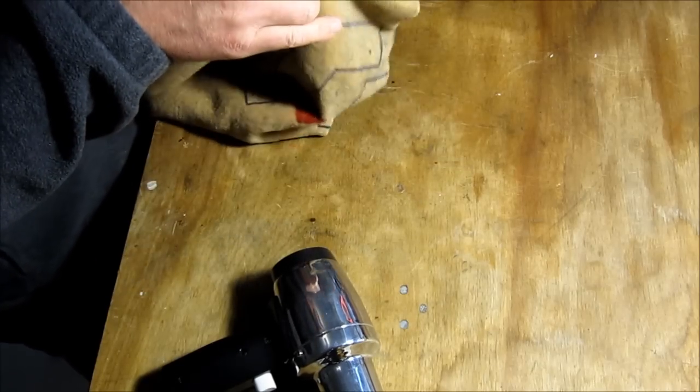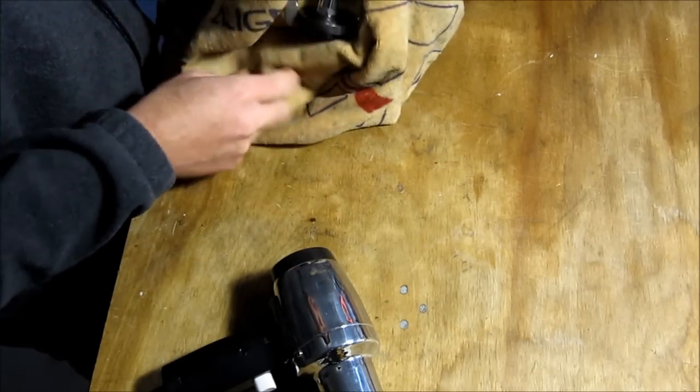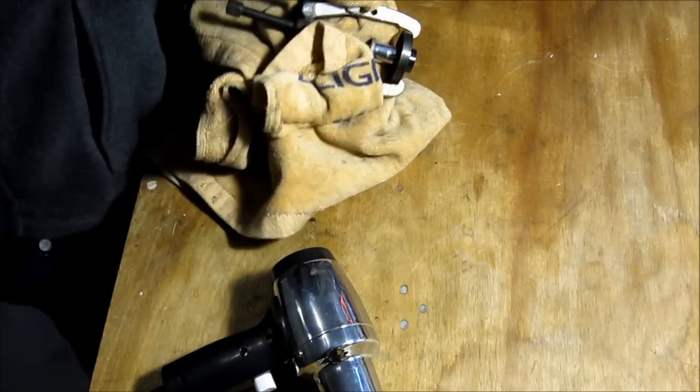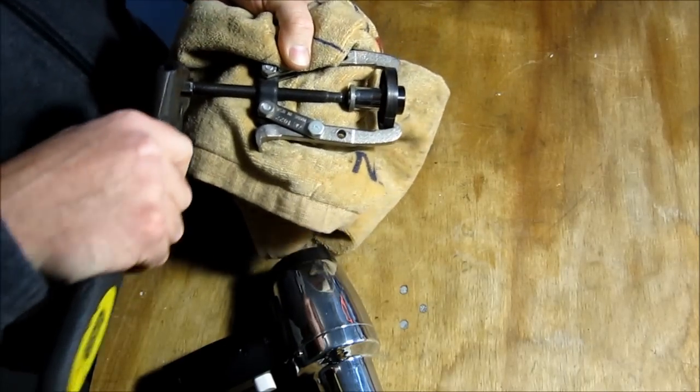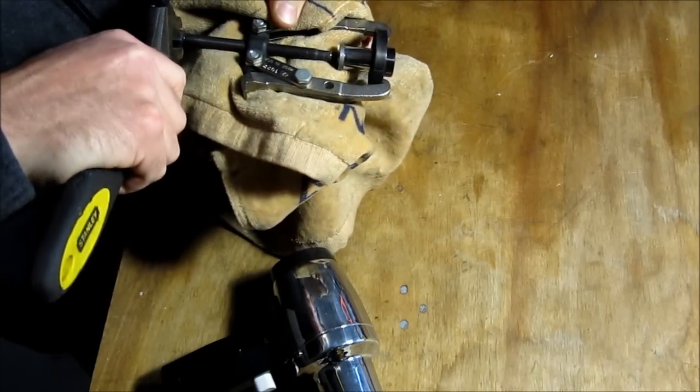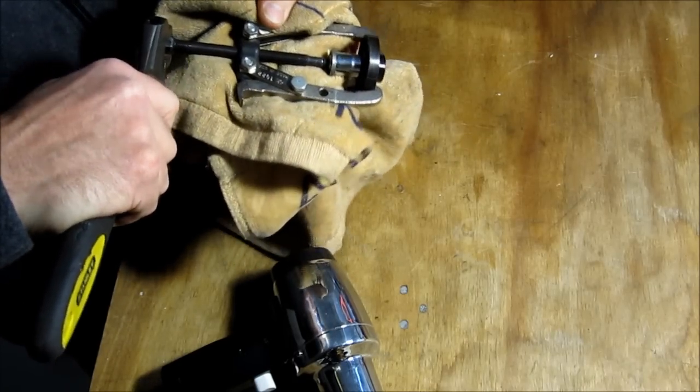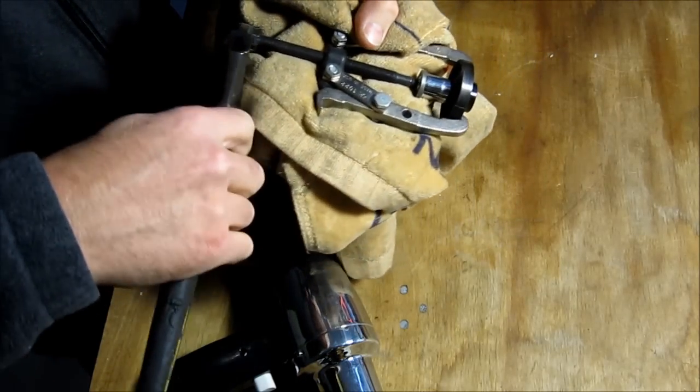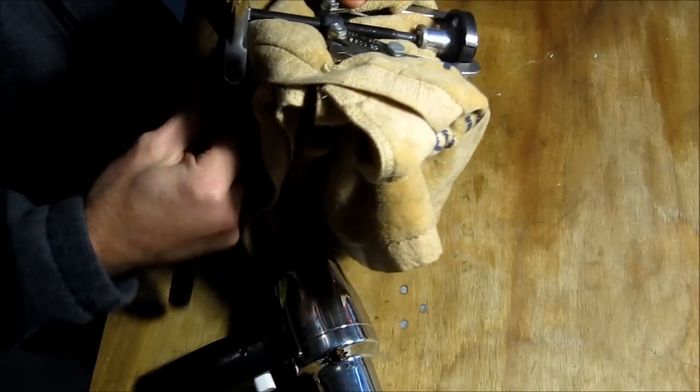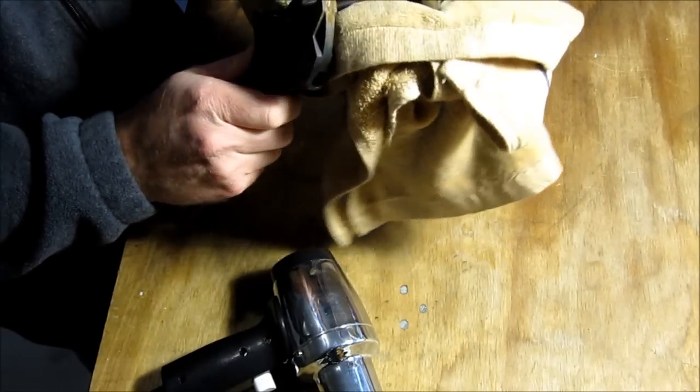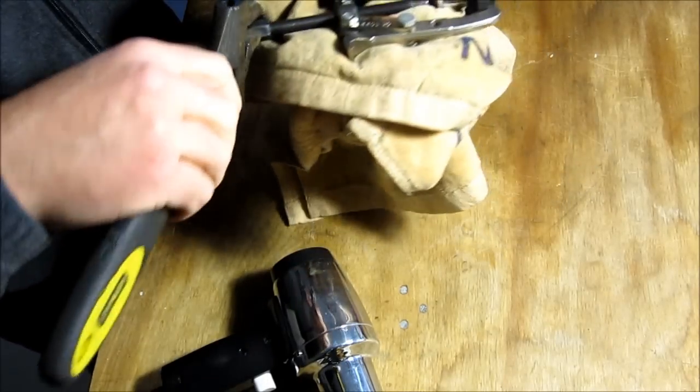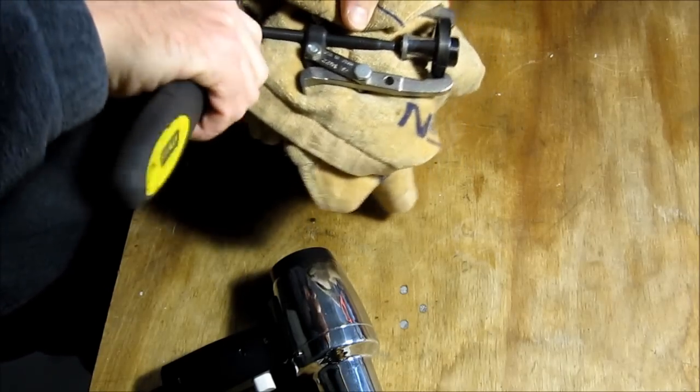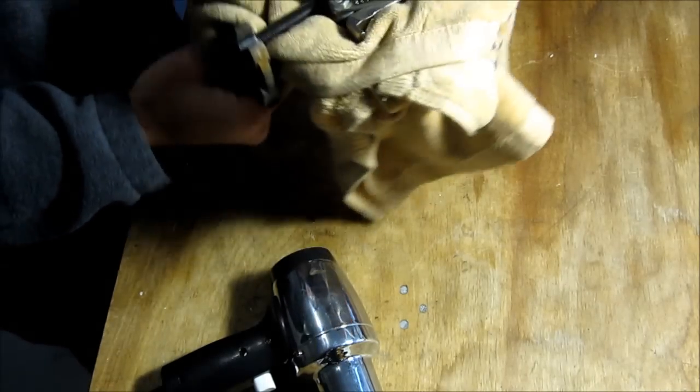Once you get that heated up, you may want to use a towel just to hang on to the bearing pullers because they can sometimes get kind of hot. Then get your wrench on here and you want to work kind of quickly because usually these metals will start to cool off pretty quick. And as it cools off, you'll lose some of the ease of pushing this through.